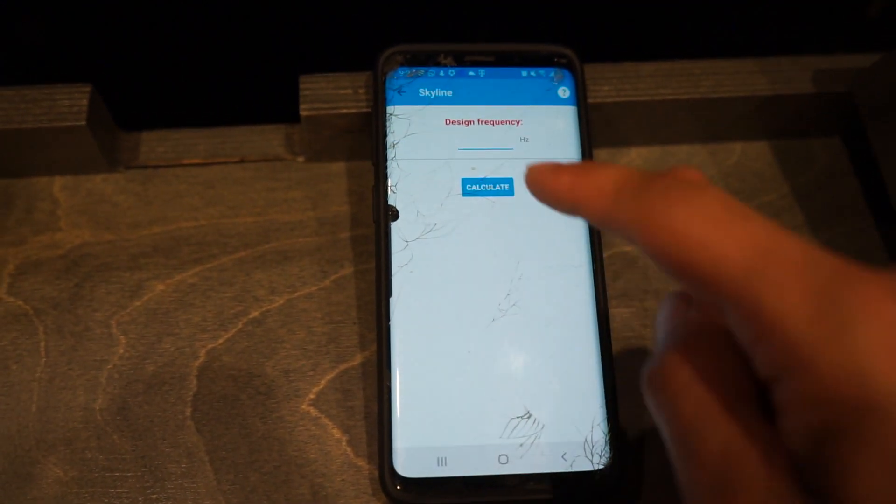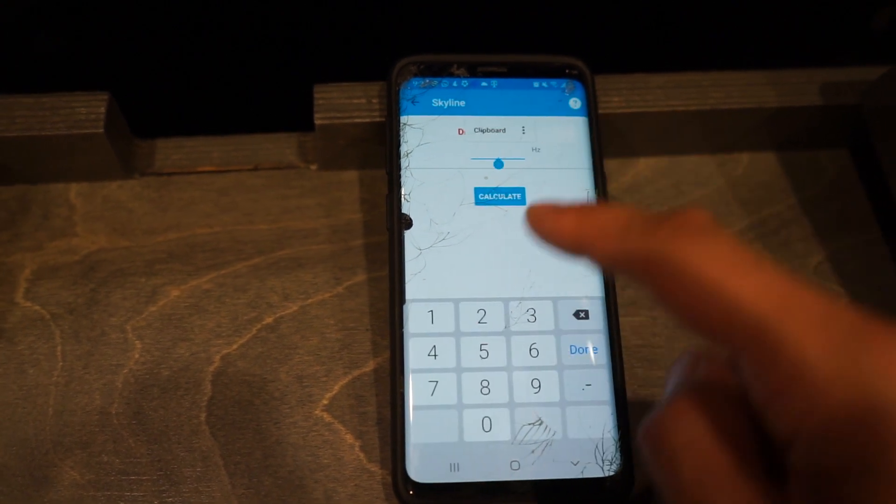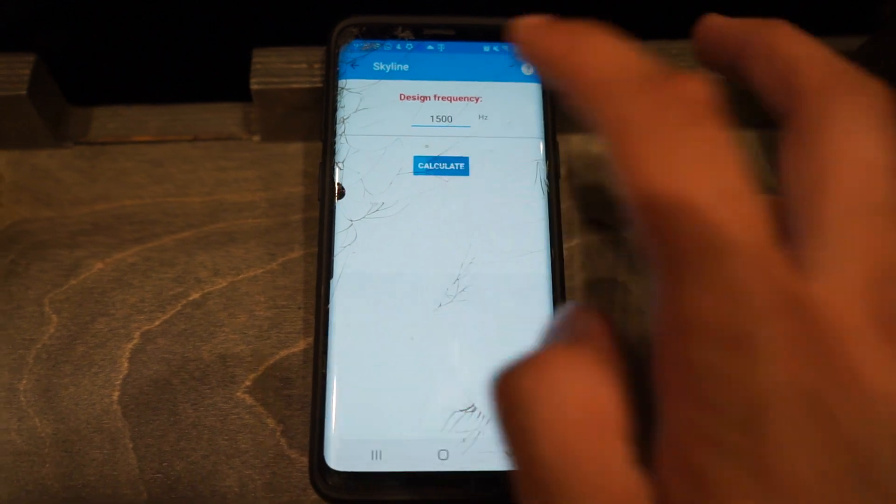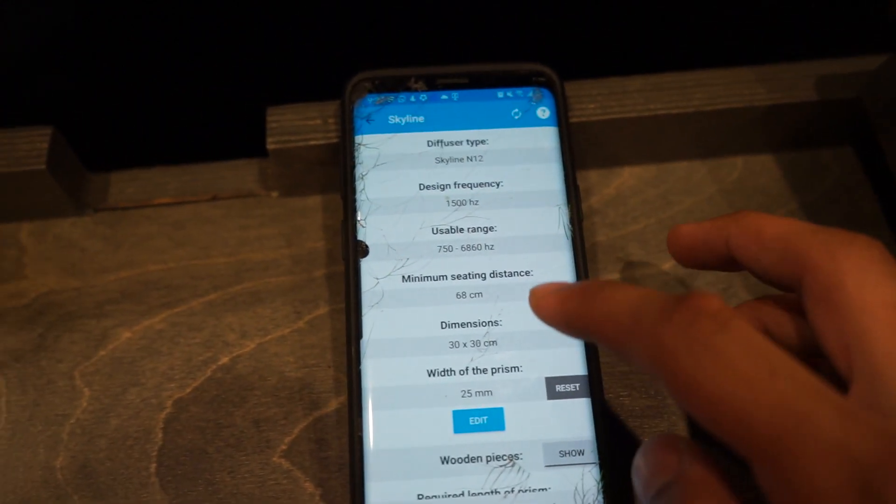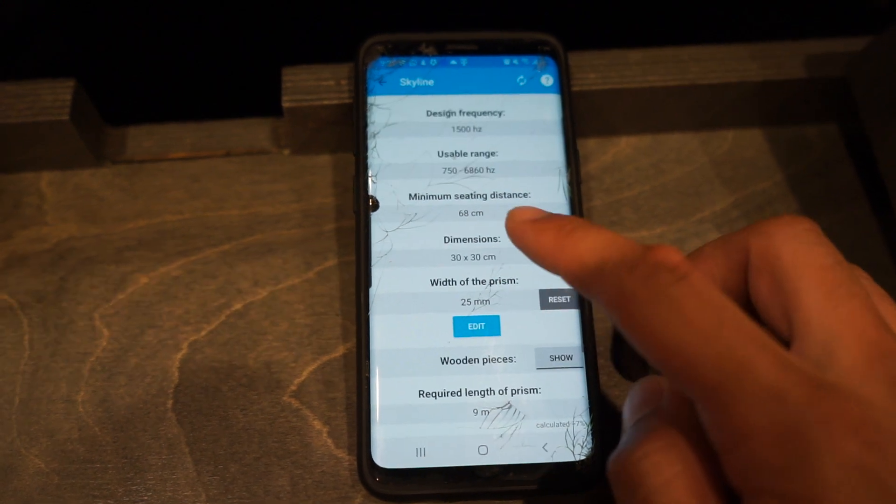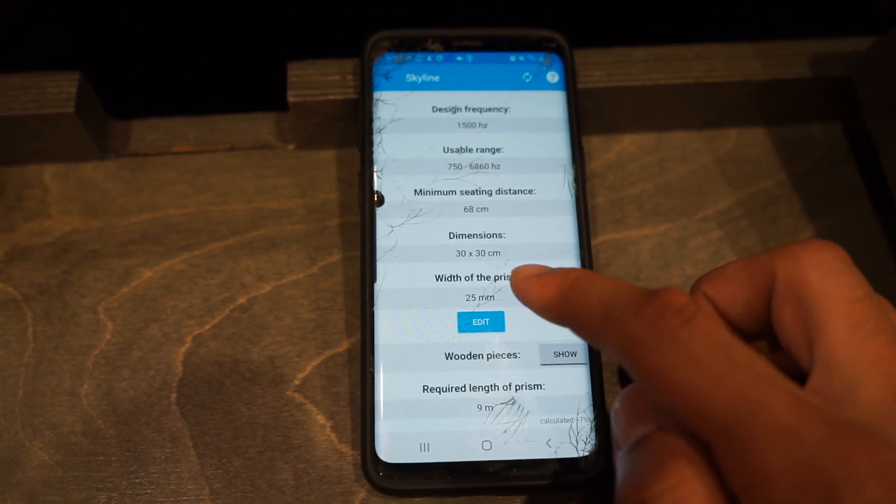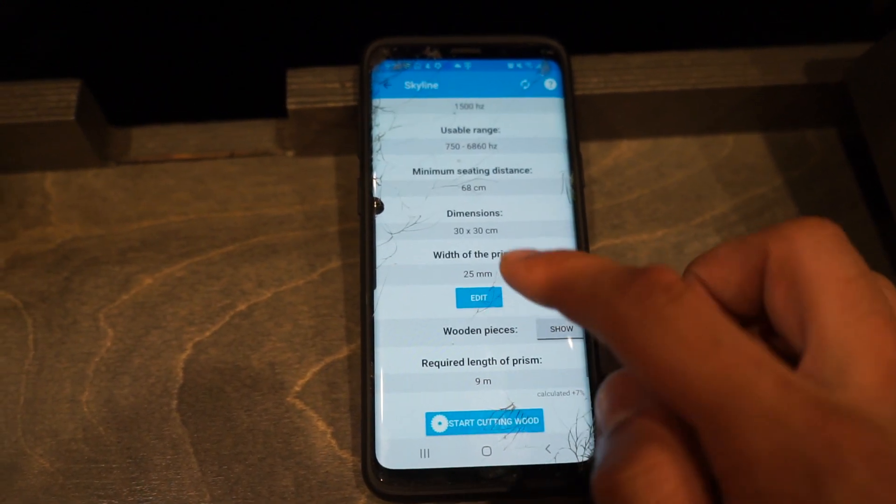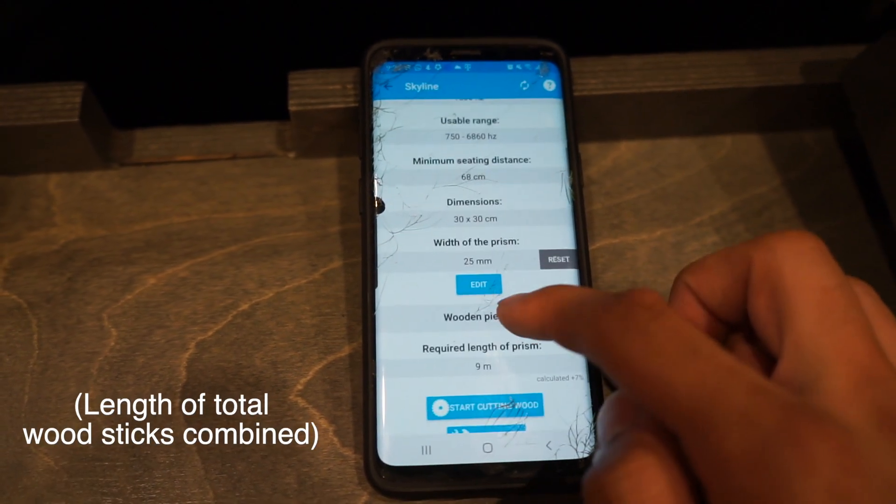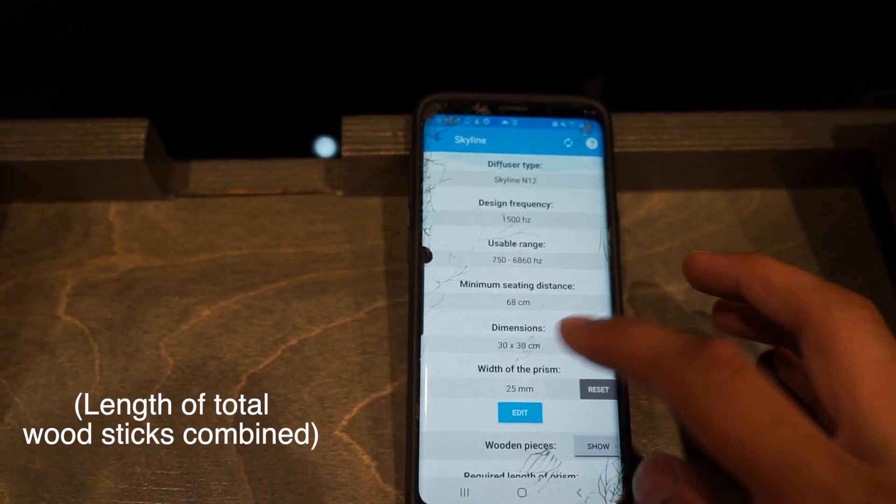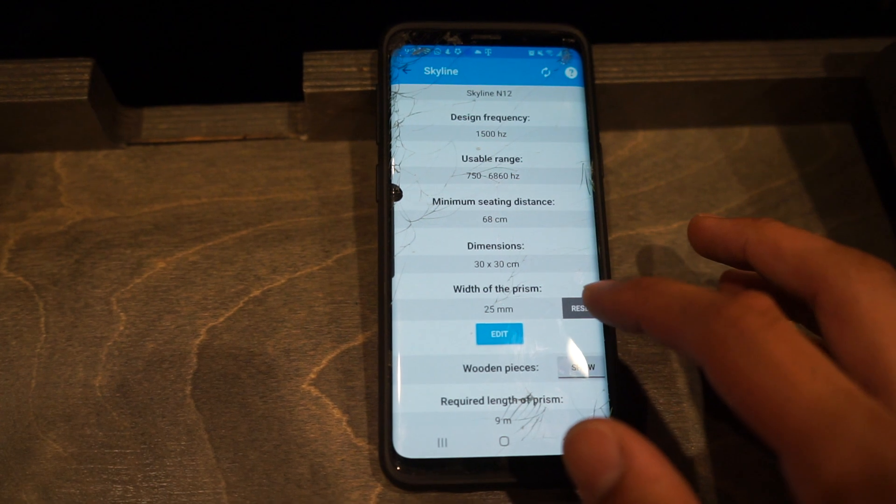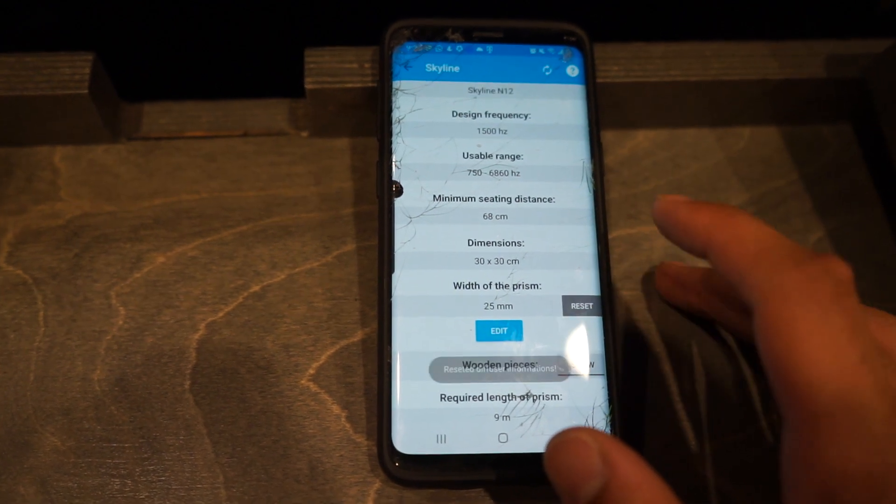So I went the Skyline diffuser, my target range was 1500, calculate, boom, and then it shows you usable range, how far it should be from you to disperse all the frequencies, and then dimensions of the backplate, width of the wood sticks, and then it shows you how long your wood sticks have to be.